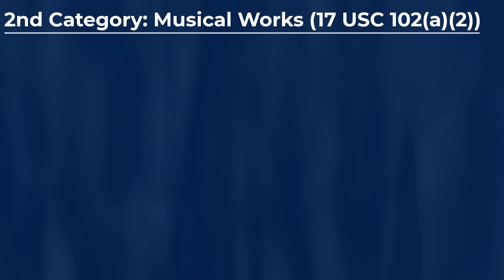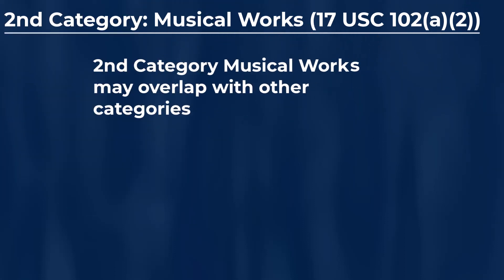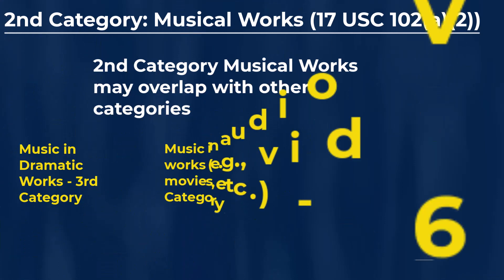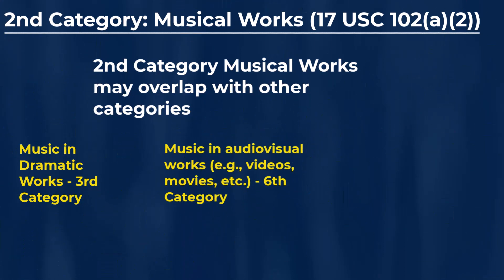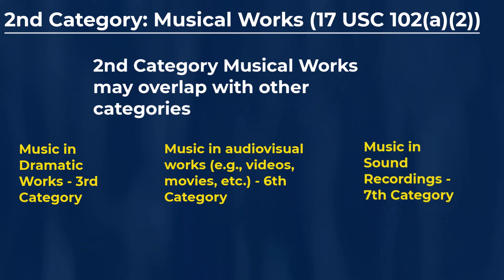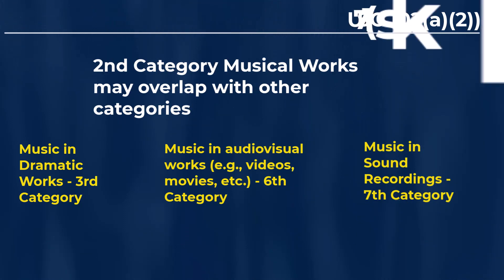Also note the second category for music often can have some overlap with some of the other categories here, because music may be used by itself — placing it in the second category — or music can often be used with dramatic works (the third category), or in audiovisual works (the sixth category), or expressed in sound recordings (the seventh category).